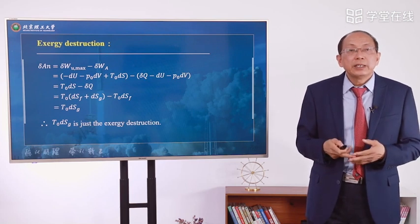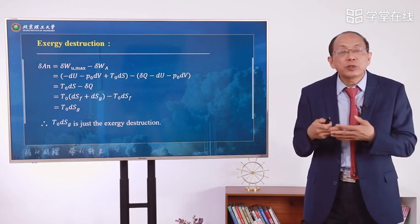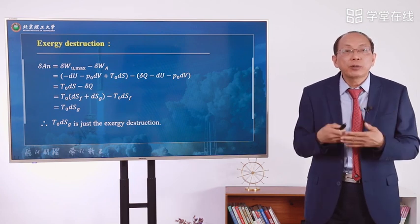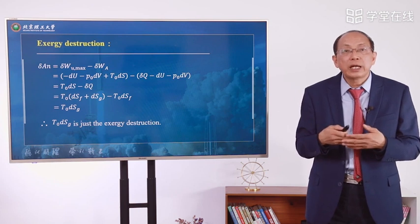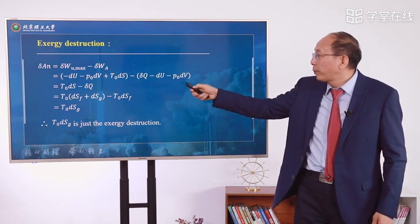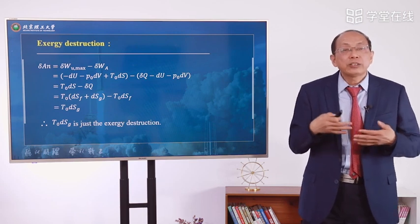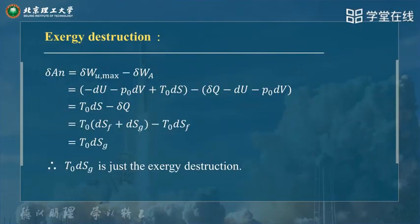We know that DS is the sum of entropy flux and entropy generation together: DS equals DSF plus DSG. Delta Q divided by T0 corresponds to the entropy flux DSF, so T0·DSF minus T0·DSF cancels out. Finally, what remains is T0·DSG — the entropy generation term — which is exactly the exergy destruction.